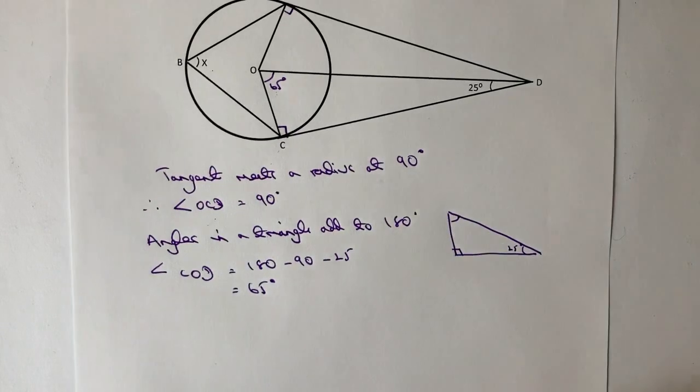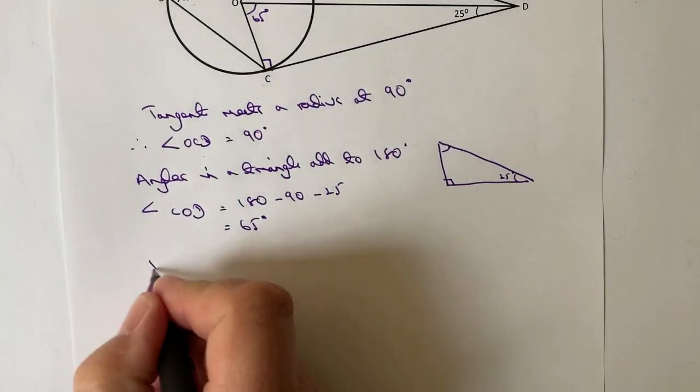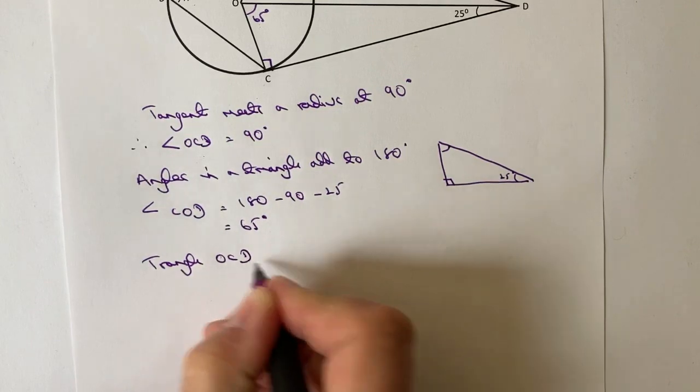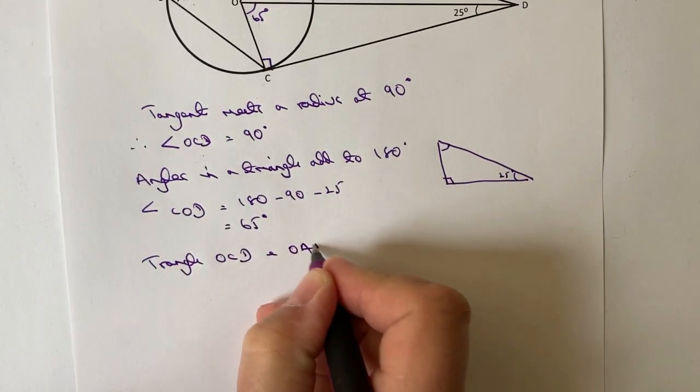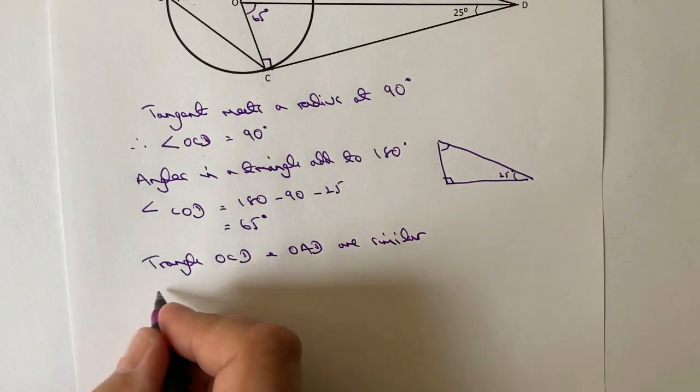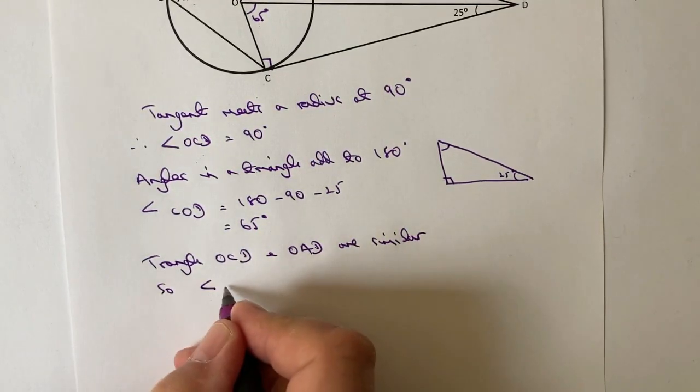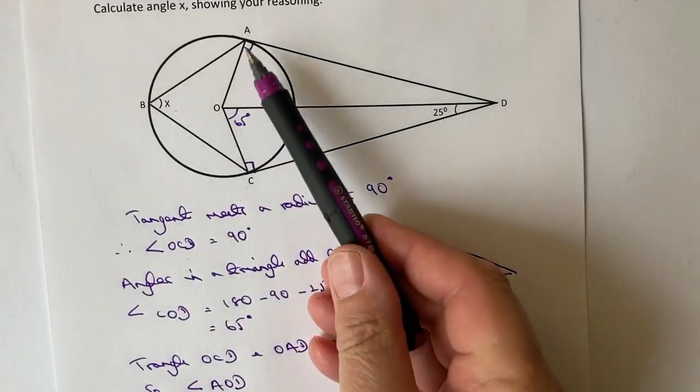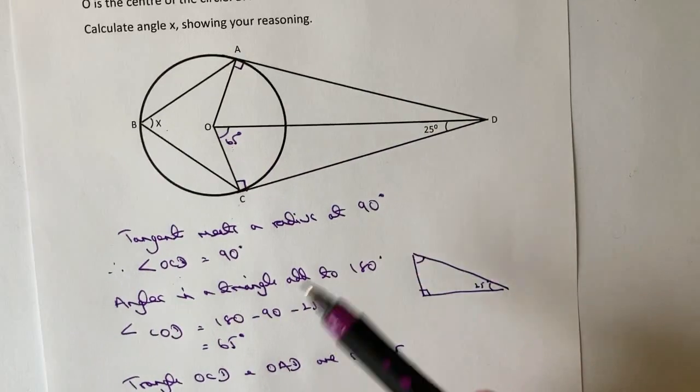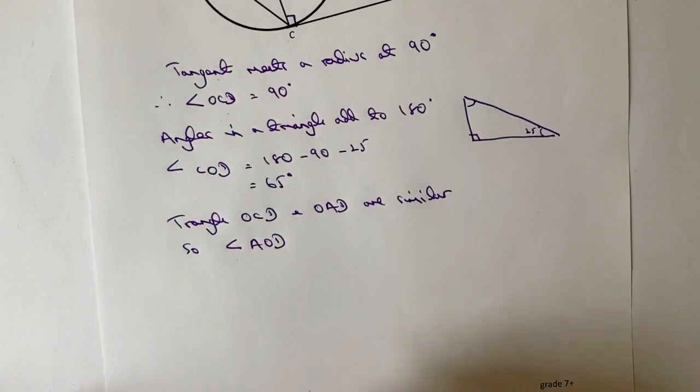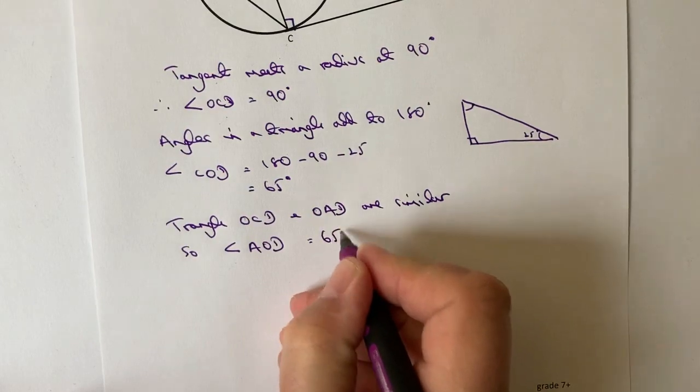Okay, so we can say that triangle OCD and OAD are similar. Okay, so angle AOD is also going to be 65 degrees, so that's equal to 65 degrees.